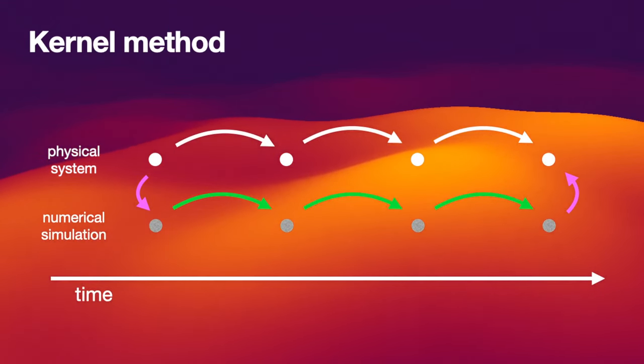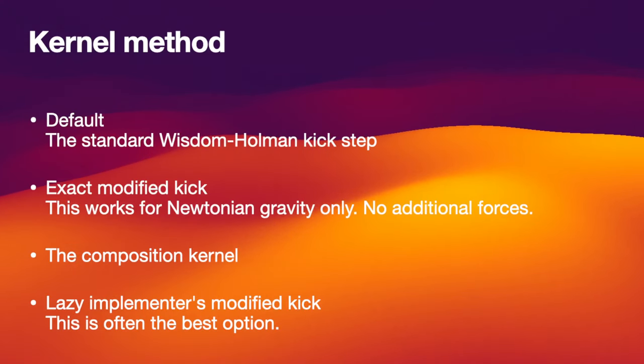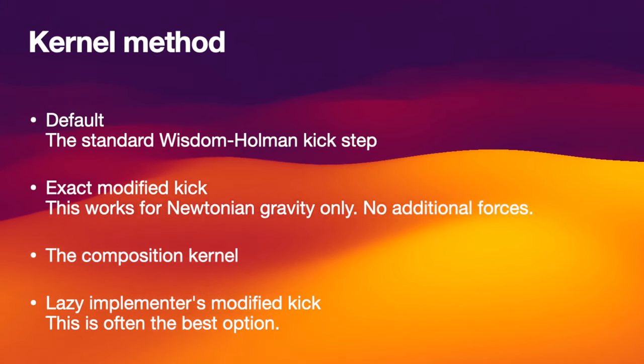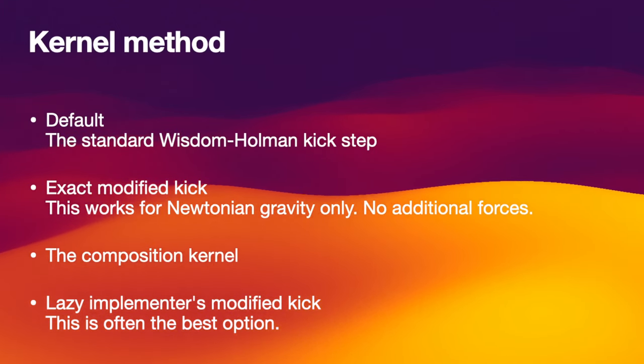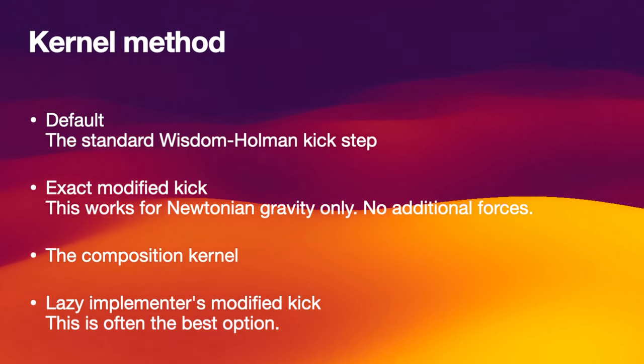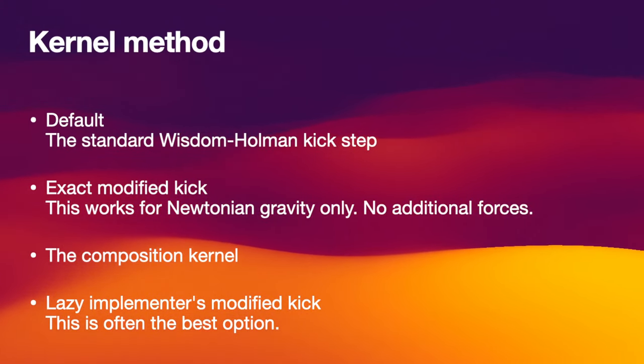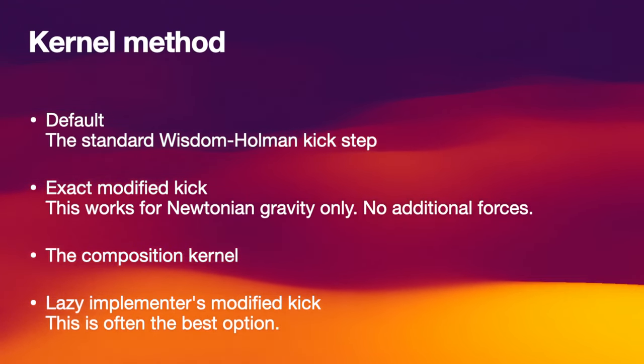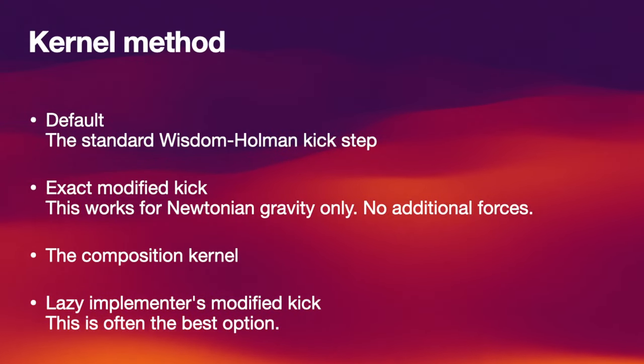In general, for all the kernel methods, you always want to use them together with these symplectic correctors. There are different kernel methods built into rebound. There's a default Wisdom-Holman kick step, that's just what Wisdom-Holman uses by default. But then you can also use what's called the exact modified kick. This implements this higher order kick step, but it only works for Newtonian gravity. It does not work for additional forces. You would have to re-derive an entirely different modified kick step whenever you change your additional forces.